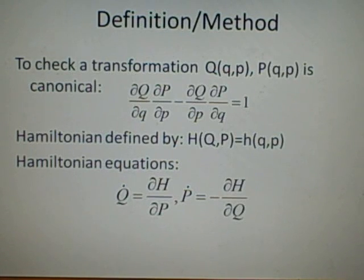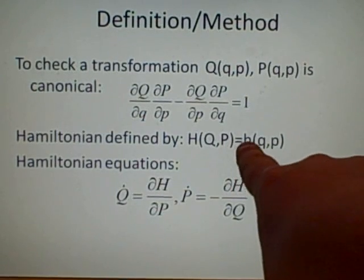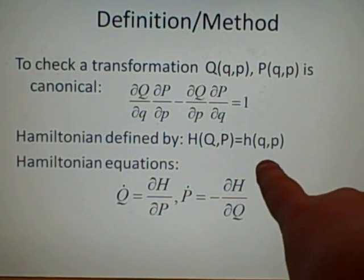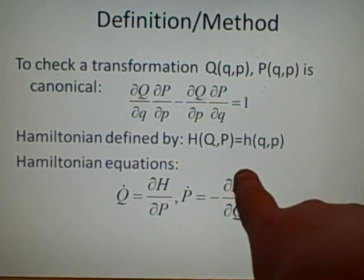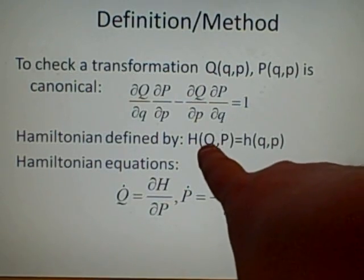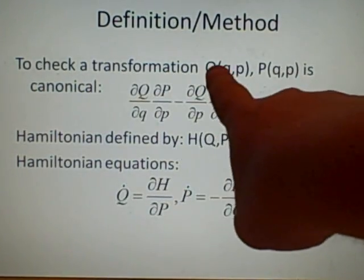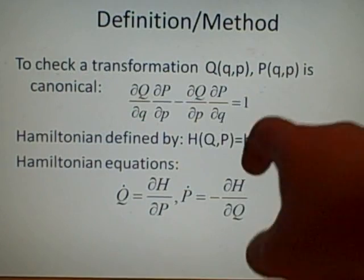Don't ask me why. Hamiltonians, you can simply define, if you're going from a little h with p's and q's, you go to the big one just by putting in the values for these and these, just putting them into this equation.